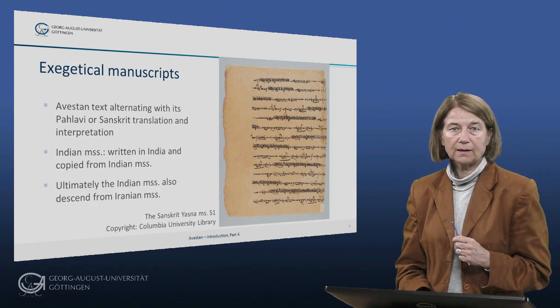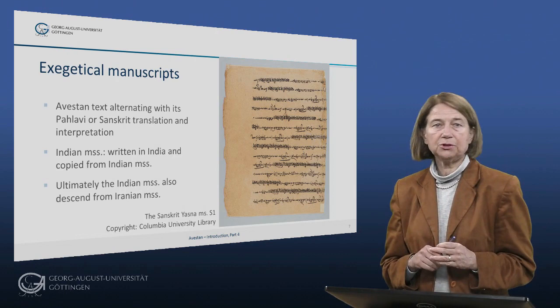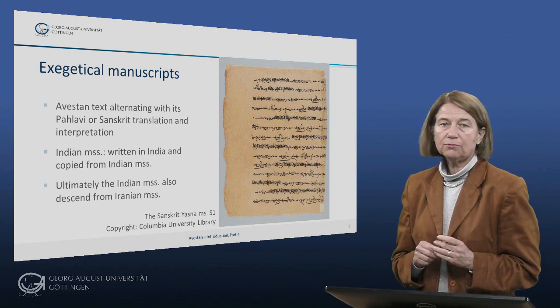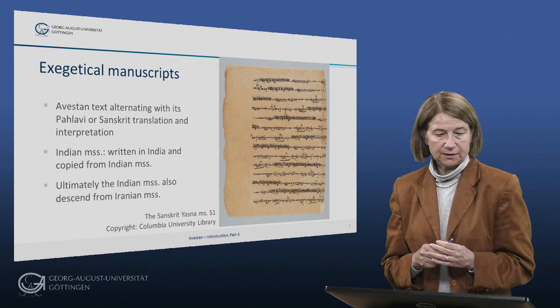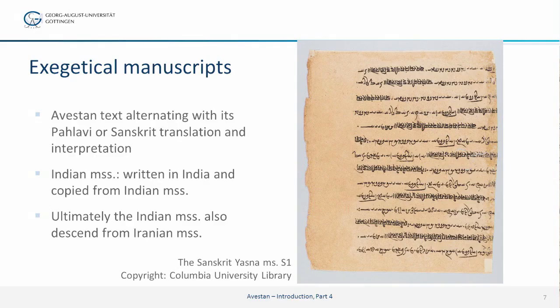The exegetical manuscripts testify to the learned tradition of the priestly interpretation of the Avesta rather than to the tradition of the liturgical practice of the rituals. They usually include no ritual instructions. Instead, they give the Avestan text alternating with the Pahlavi or Sanskrit translation. Here this manuscript is a picture of the Sanskrit Yasna manuscript S1, which offers the Avestan text alternating with its Sanskrit translation. The Avestan text is written in black ink and the Sanskrit translation is also written in black ink.